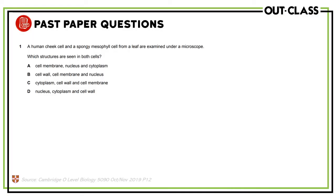The first MCQ question says that a human cheek cell and a spongy mesophyll cell from a leaf are examined under the microscope. Which structures are seen in both cells? In essence, they are asking about plant and animal cells and what is found in both of them. Option A gives us cell membrane, which is obviously found in both; the nucleus is also found in both animal and plant cells, and so is the cytoplasm. So for now, this seems like the correct option.